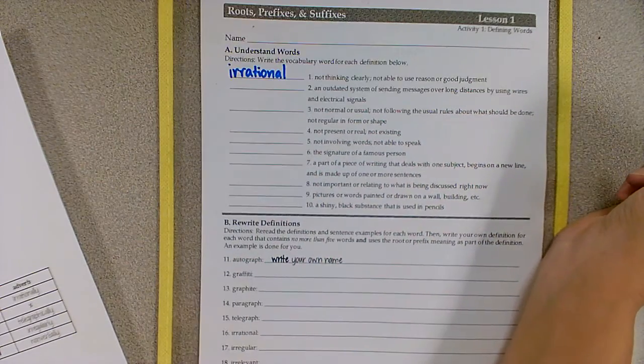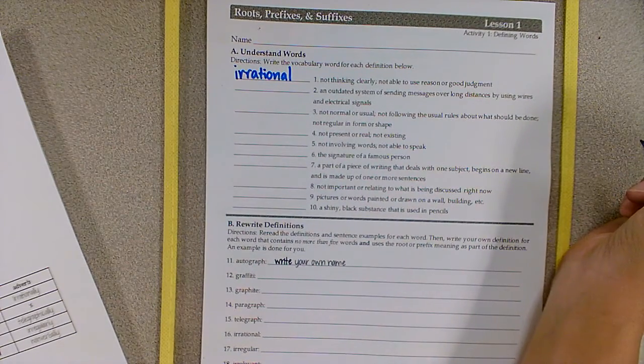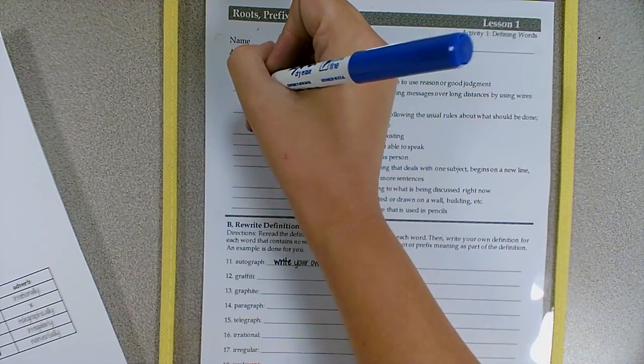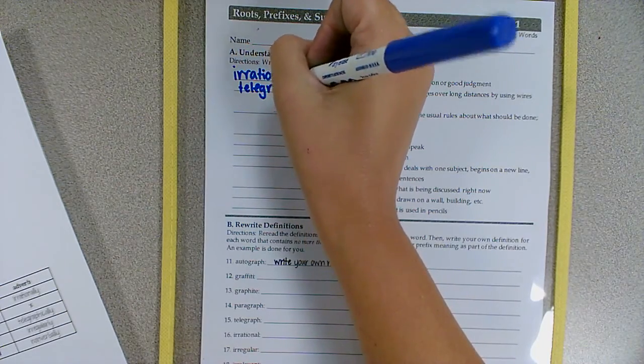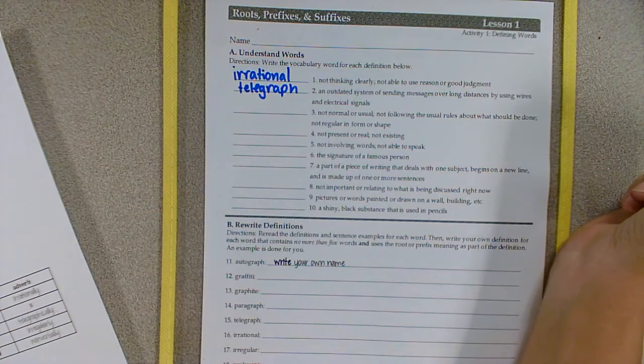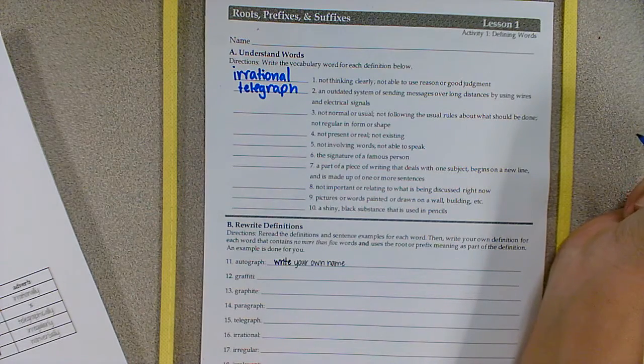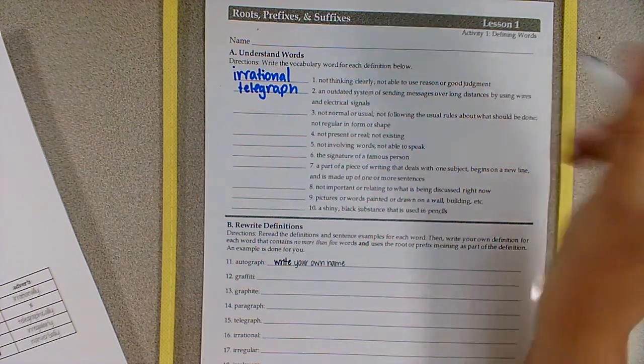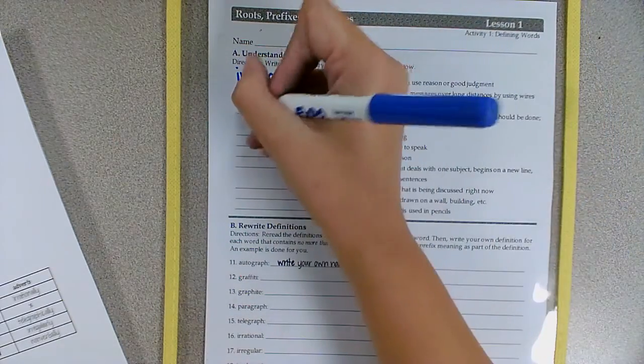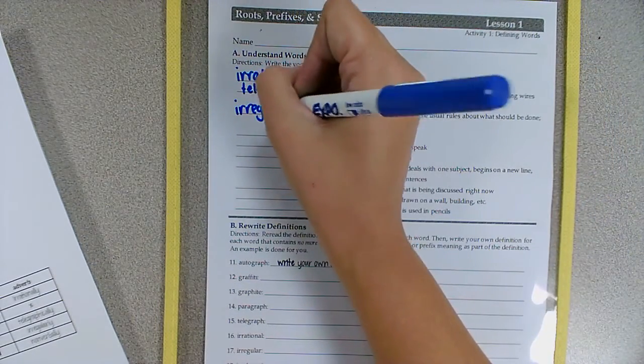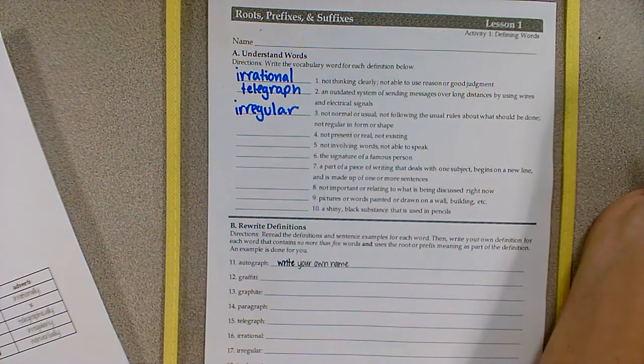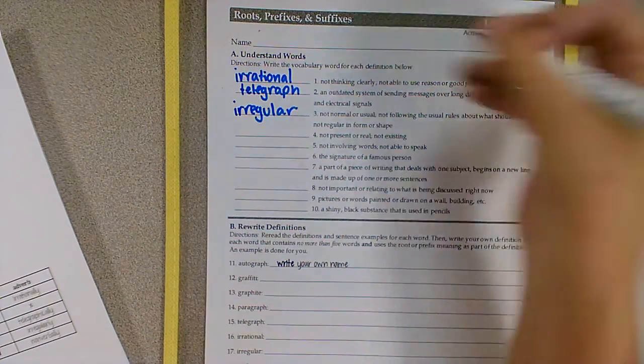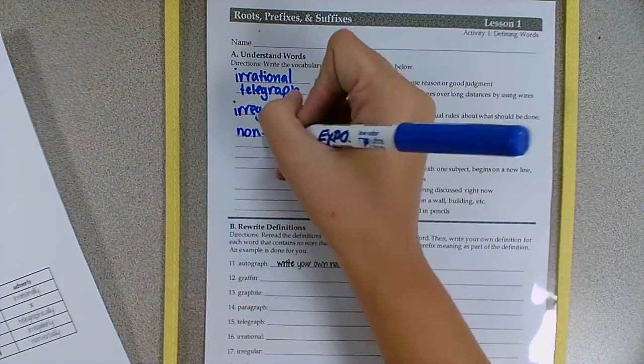Number two, an outdated system of sending messages over long distances by using wires and electrical signals. That's a telegraph. Number three, not normal or usual, not following the usual rules about what should be done, not regular in form or shape. That's kind of our hint right there, not regular. Number four, not present or real, not existing. Non-existent.